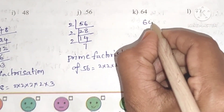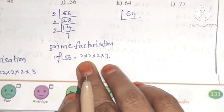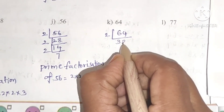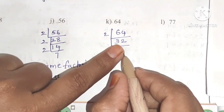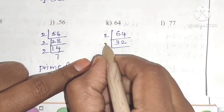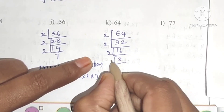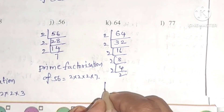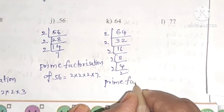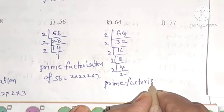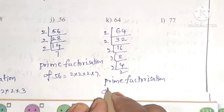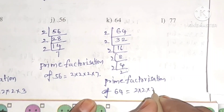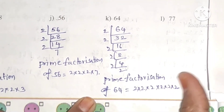Next, 56. Units place 6, so 2 divides it: 2 twenty-eights, 2 fourteens, 2 sevens. Since 7 is a prime number, we stop. Prime factorization of 56 is 2 into 2 into 2 into 7. For 64: dividing by 2 six times — 2 thirty-twos, 2 sixteens, 2 eights, 2 fours, 2 twos — gives prime factorization of 64 as 2 into 2 into 2 into 2 into 2 into 2.